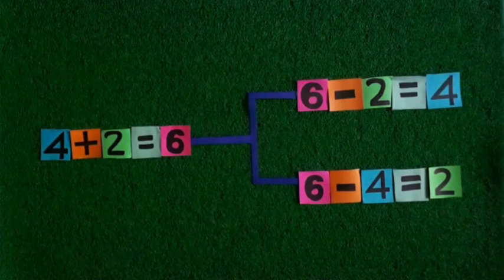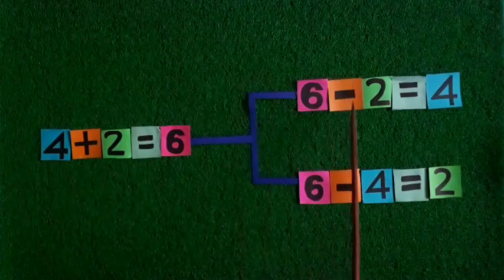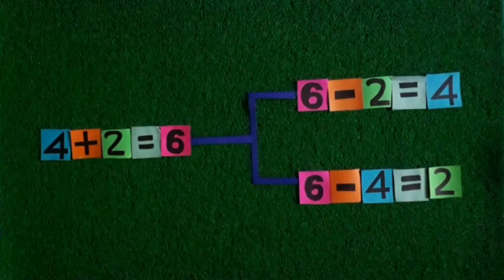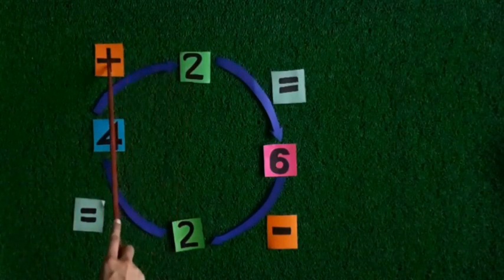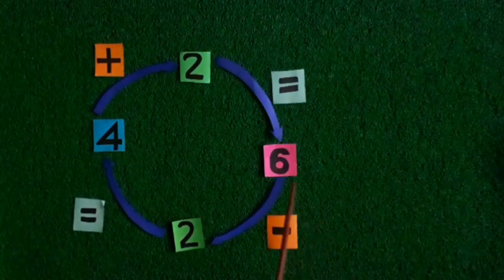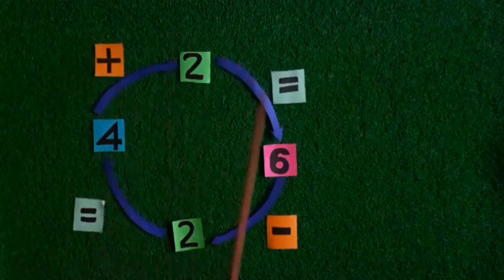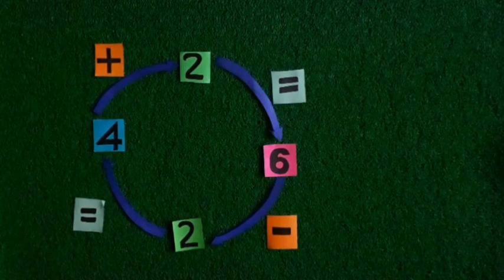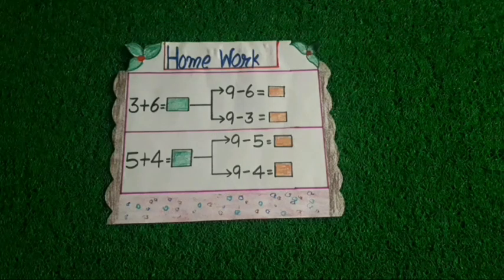Addition and subtraction are opposites of each other. From the addition facts, we can write subtraction facts because these are inverse operations. When we add four and two, we get six. And when we subtract two from six, we get four. Addition and subtraction are inverse operations. Now kids, you have to solve these sums from page number 51 of your book. Thank you.